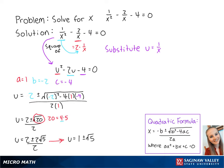Now we can plug this into the equation u equals 1 over x. So we get 1 over x equals 1 plus the square root of 5, which becomes x equals 1 over 1 plus the square root of 5.